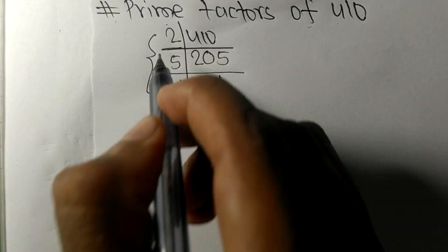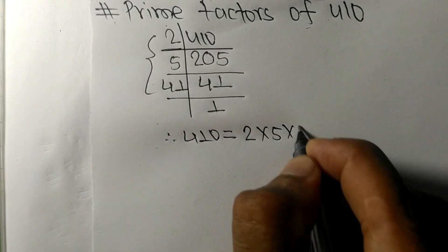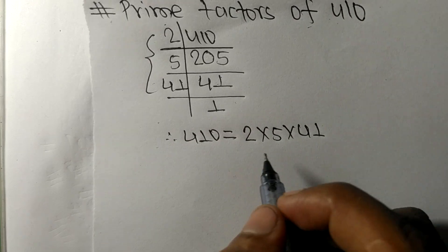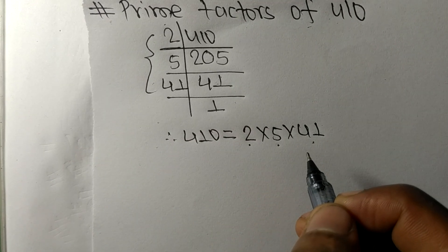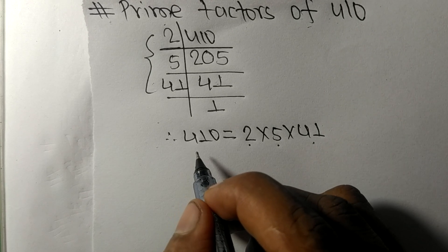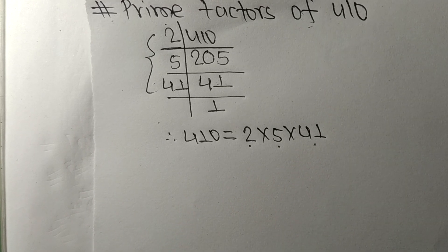2 times 5 times 41. So 2, 5, and 41 are the prime factors of 410. That's all for today, and thanks for watching.